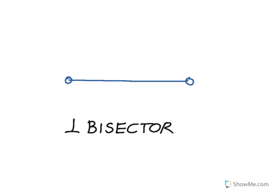Next, let's talk about what a perpendicular bisector is. A perpendicular bisector does what its name says. It takes a segment and bisects it. A perpendicular bisector can be a line, ray, or segment that passes through the midpoint of another segment, bisecting it into two congruent segments, and it hits it at a perpendicular. So it is both a bisector and a perpendicular line to the given segment.